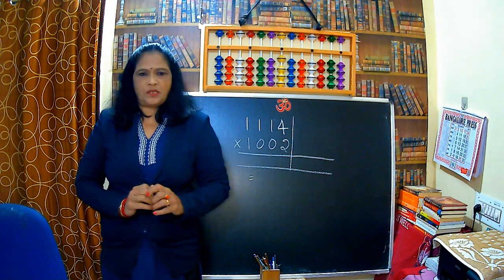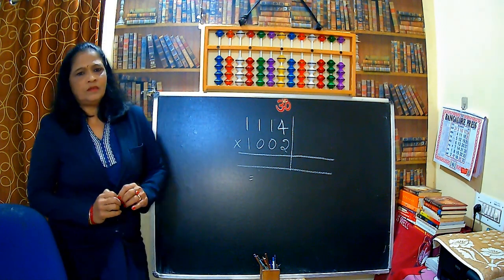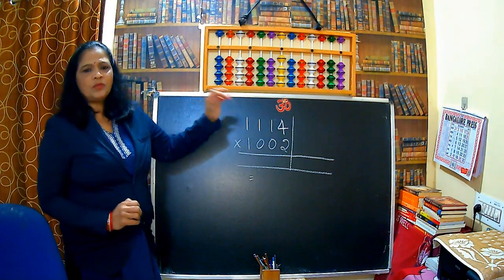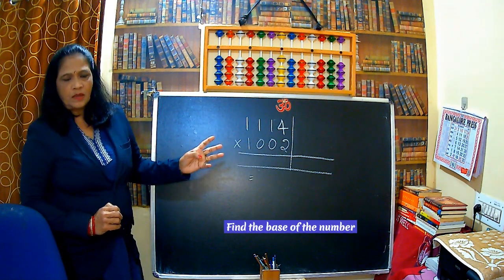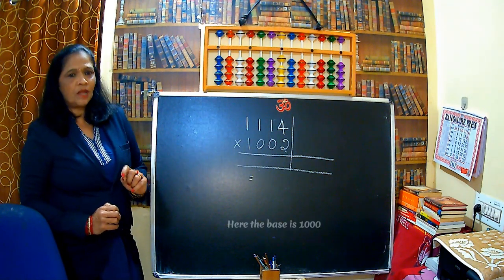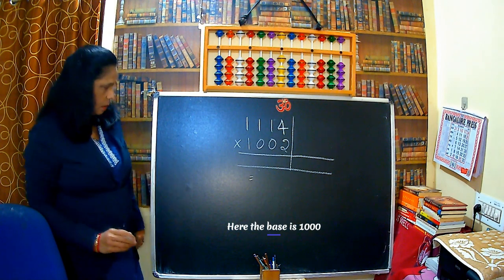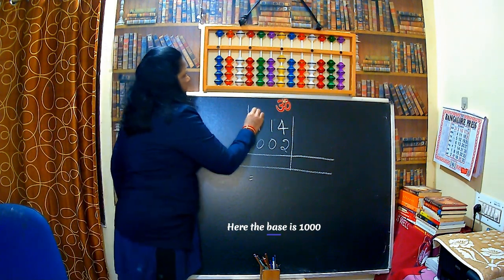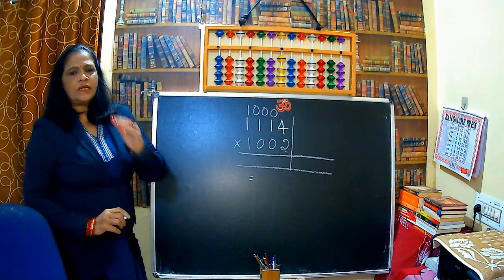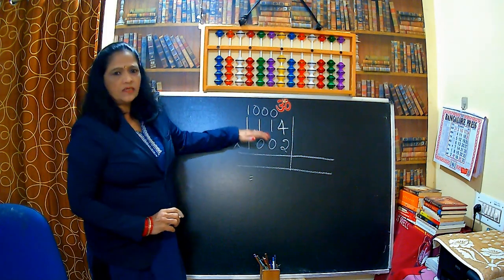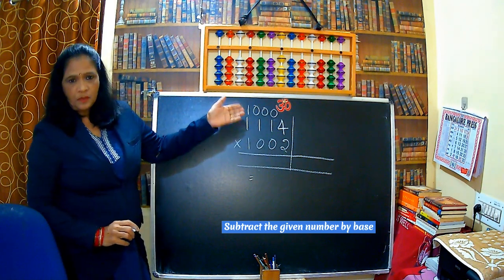In the left hand side, what is the method we should do? First we should find the base of the number. This is the four-digit number, so the base is thousand. It is very near to thousand. One thousand.